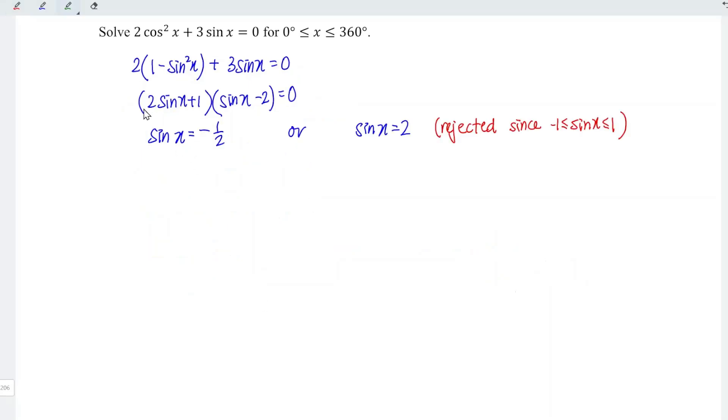Let's solve for x. If sine x is equal to negative 1 over 2, which means that x is equal to arcsine negative 1 over 2. We know that arcsine 1 over 2 is 30 degrees.